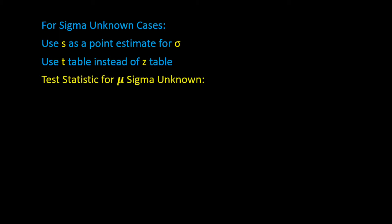The test statistic for hypothesis testing for the population mean when sigma is unknown is a t-test, so t is equal to x-bar minus the hypothesized value of mu, divided by s over the square root of n.